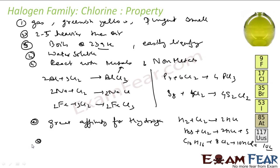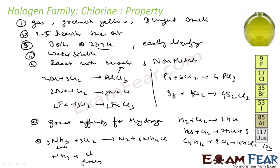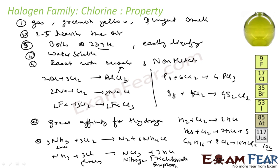With excess ammonia, chlorine gives nitrogen gas and ammonium chloride. But if you make chlorine excess instead, the same reaction gives nitrogen trichloride (NCl3) and hydrochloric acid. Nitrogen trichloride is explosive. So with excess ammonia you get N2 and NH4Cl, while with excess chlorine you get NCl3 and HCl.